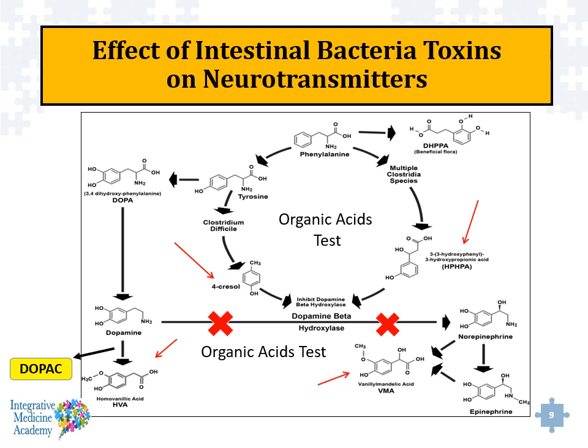Looking at the organic acid test in relation to phenylalanine, tyrosine, DOPA, and dopamine — dopamine normally gets converted to norepinephrine through the actions of the dopamine beta-hydroxylase enzyme. Various clostridia bacterial toxins, specifically p-cresol and HPHPA produced from multiple clostridia species or Clostridium difficile, can negatively influence dopamine beta-hydroxylase, causing the enzyme to become inhibited. Anytime dopamine beta-hydroxylase activity is inhibited, we'll see a rise in dopamine, which can then be picked up as an increased level of HVA on the organic acid test, as well as an increased level of DOPAC.